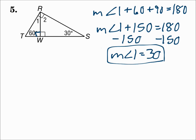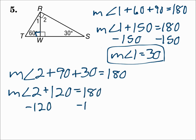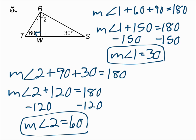Now for the measure of angle two. You know two angles, so use the Triangle Angle Sum Theorem to find the third angle. The measure of angle two plus 90 plus 30 equals 180. 90 plus 30 is 120. Subtract 120 from each side. The measure of angle two is 60. The triangle angle sum theorem says that the three angles of a triangle add up to equal 180.